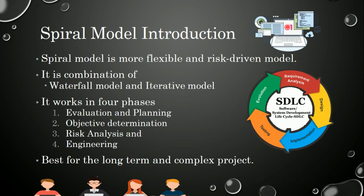The spiral model works in four phases. The first is evaluation and planning, the second is objective determination, the third is risk analysis, and the fourth is the engineering phase. The spiral model is best for long-term and complex products, and it produces better functionality and tools to develop any software system.